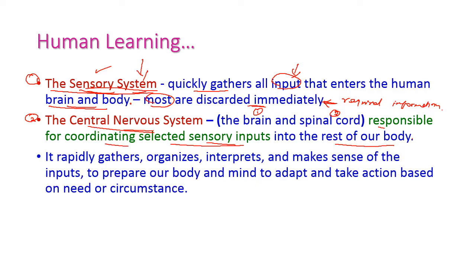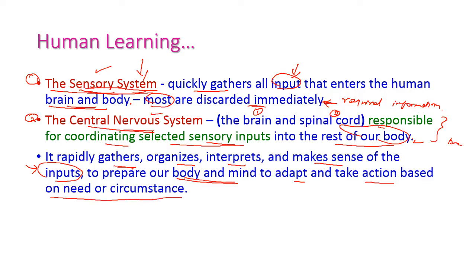The central nervous system rapidly gathers, organizes, interprets, and makes sense of the input to prepare our body and mind to adapt and take actions based on need or circumstance. The information is passed all over the body within a microsecond, so we can respond to input immediately.